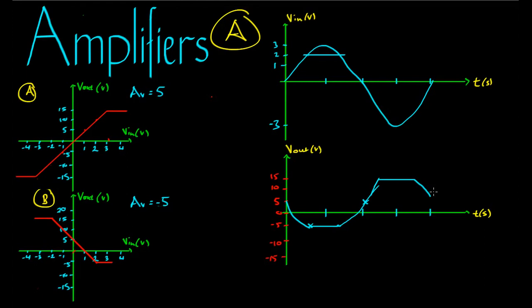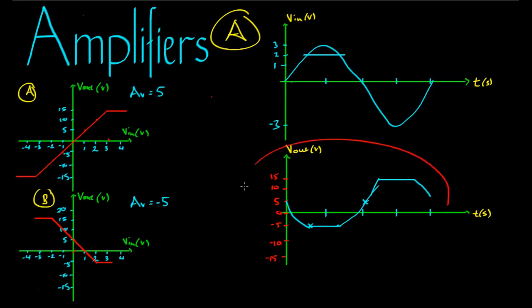The tip for sketching these graphs effectively is to first plot all the significant points — the V out that each key V in value corresponds to — and then work back to the finer points. The more points you plot, the better idea you'll have of the shape of the V out graph, because a line is technically an infinite number of points strung together.